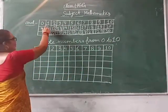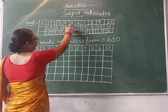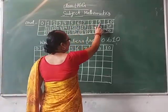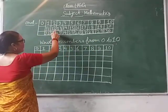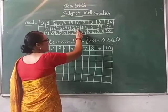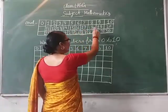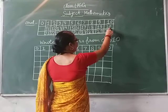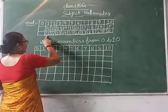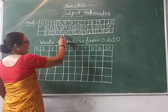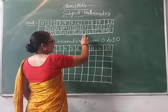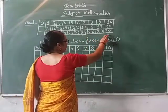0, 1, 2, 3, 4, 5, 6, 7, 8, 9, 10, 11, 12, 13, 14, 15, 16, 17, 18, 19, 20, 21, 22, 23, 24, 25, 26, 27, 28, 29.